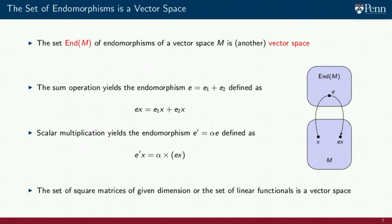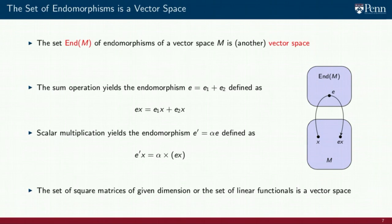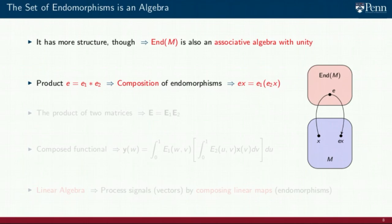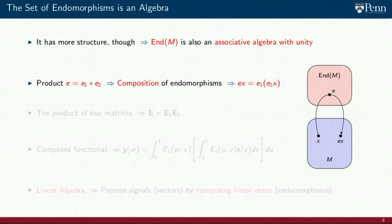It's important to note that the vector space of endomorphisms is not the same as M. For signals in Rn, the space of endomorphisms is the set of square n×n matrices. For finite energy signals on [0,1], the space of endomorphisms is a space of linear functionals. Moreover, End(M) is not just a vector space but also an associative algebra with unity — we signify this in the figure by changing its color. To make End(M) an algebra, we define the product of endomorphisms E1 and E2 as their composition.